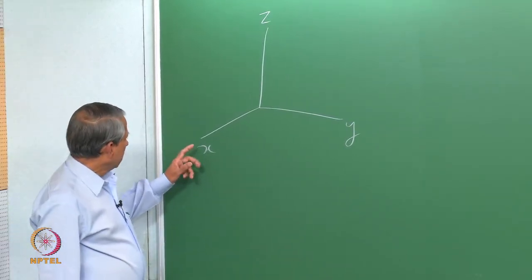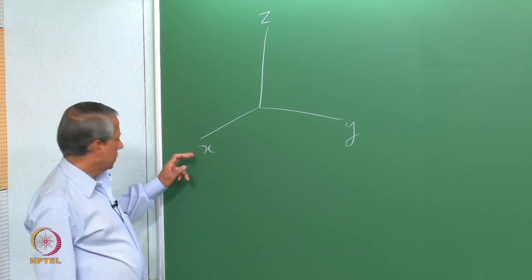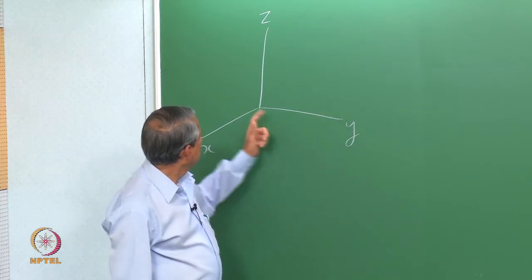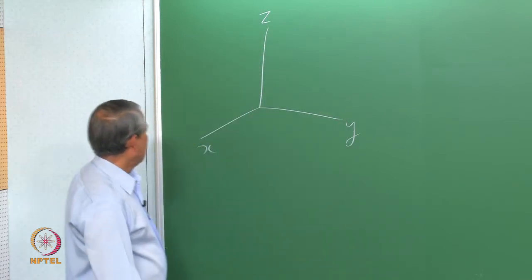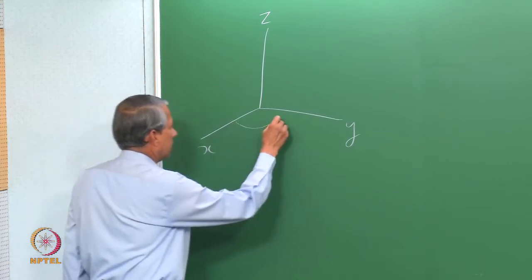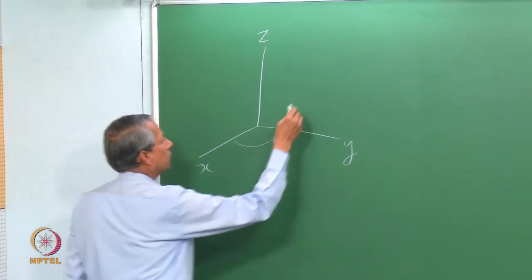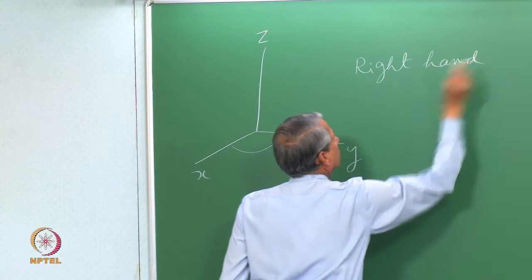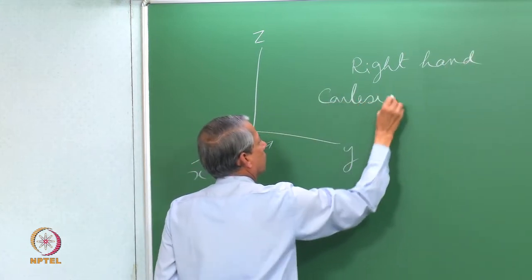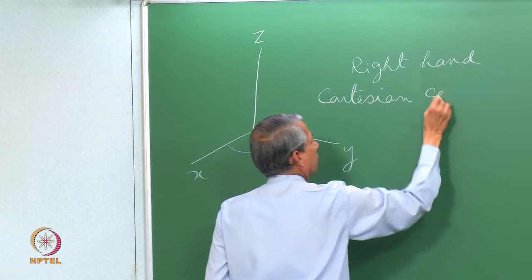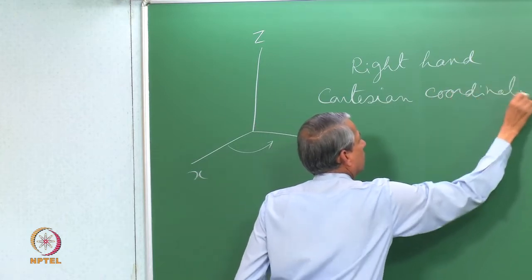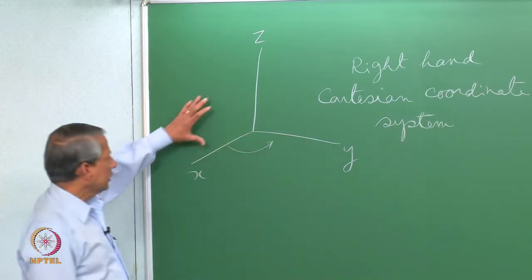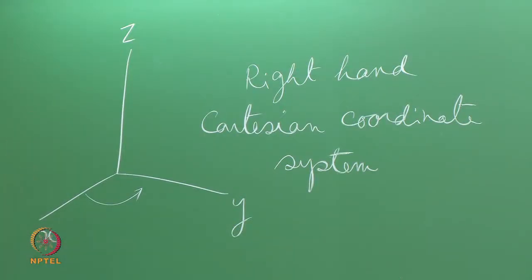Notice the relative positions of these three coordinates. X is here and then you go anticlockwise direction to y, and then z is in the vertical direction. This direction is anticlockwise. By no means is this the only coordinate system possible — there are many others, but this is very common.